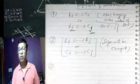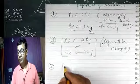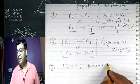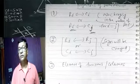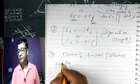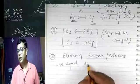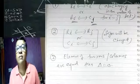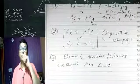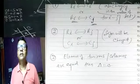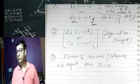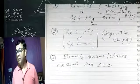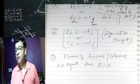Third property: element of two rows ya columns agar equal ho jaayein, then determinant ka value zero hoga. Koi bhi do row ya do column ka element agar equal ho, ya do row ya do column aapas mein equal ho jaayein, toh iska matlab hai zero. Ye teen properties humne pichle class mein bahut achhe se study kiya tha.